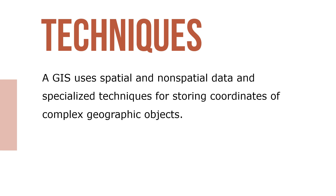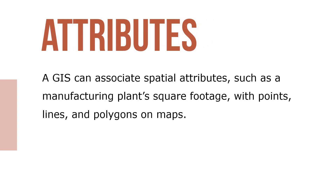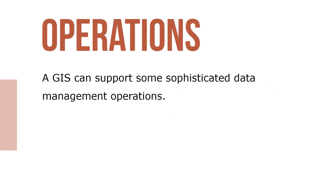Digitized maps and spatially oriented databases are two major components of GIS. A GIS can associate spatial attributes — such as a manufacturing plant's square footage — with points, lines, and polygons on maps.